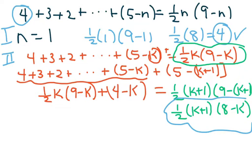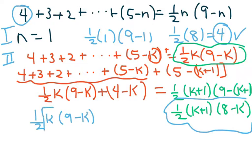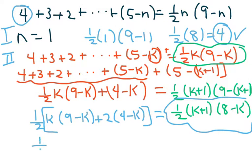I see the one-half here, so I'm going to multiply through by two, similar to a previous video. That gives: one-half k times (9 minus k) plus two times (4 minus k). Now I need to distribute and clean this up, because I want to factor out (k plus one).